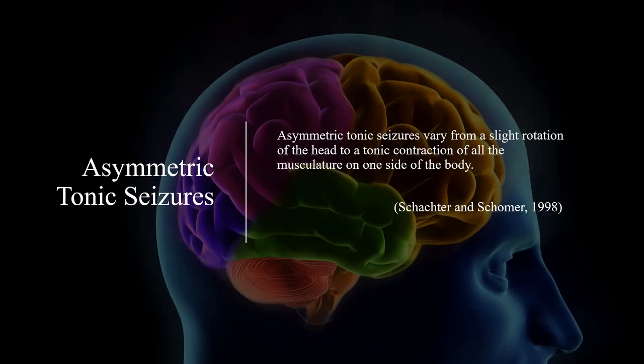Asymmetric tonic seizures vary from a slight rotation of the head to a tonic contraction of all the musculature on one side of the body.